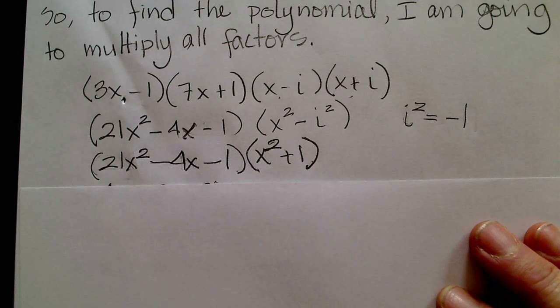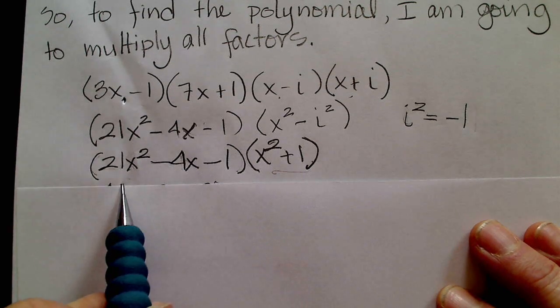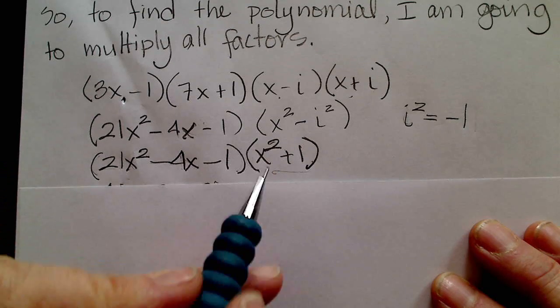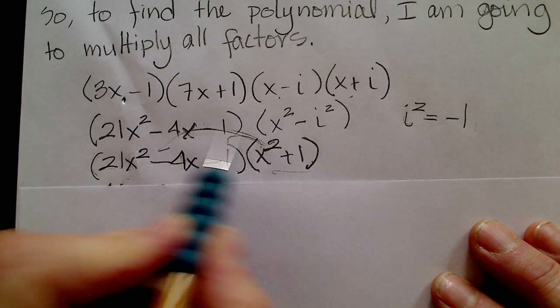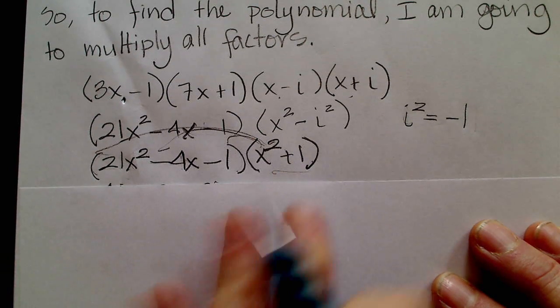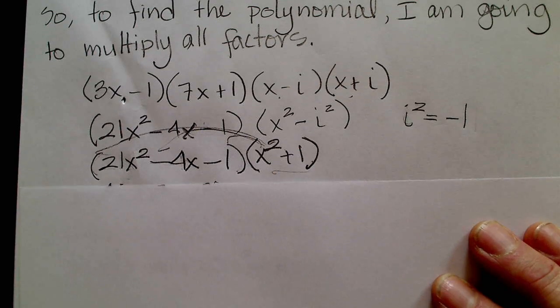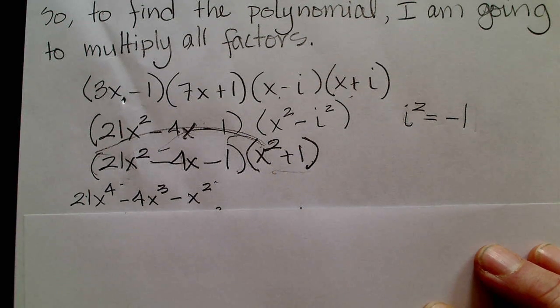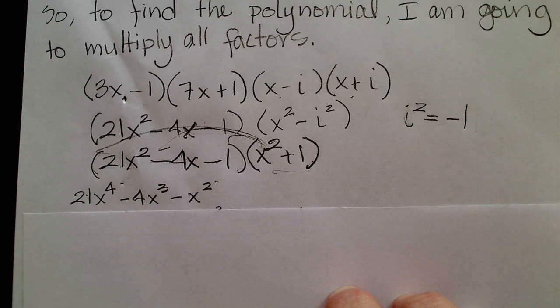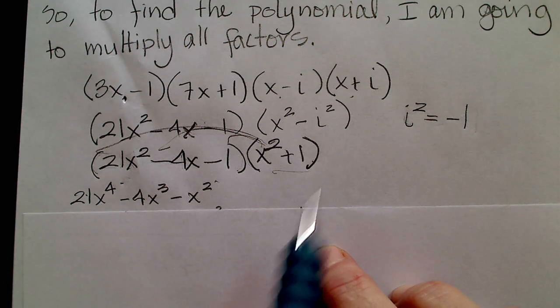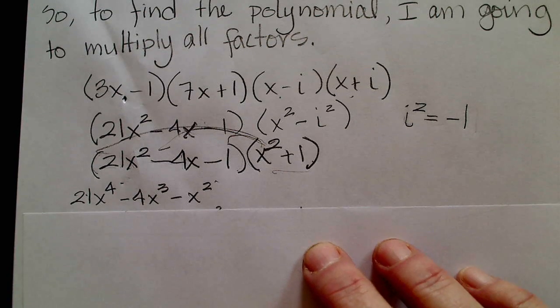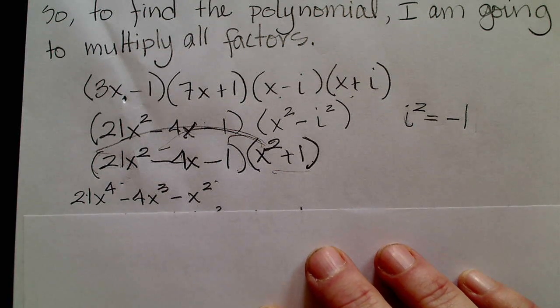So now what I need to do is multiply this binomial times that trinomial. And I'll just use my distributive property here. And I'll multiply that x squared through and I get 21 x to the fourth minus 4x cubed minus x squared. And then I'm going to multiply the one through in the same fashion using distributive property.